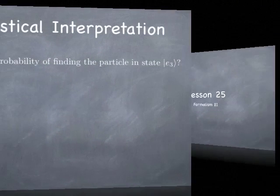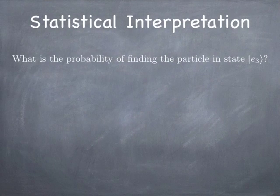The first thing to discuss is the statistical interpretation of quantum mechanics. The idea is that if you decompose a quantum state into eigenstates of some observable and you measure that observable, the probability of measuring a particular value is the square of the amplitude that that eigenstate shows up in the superposition.